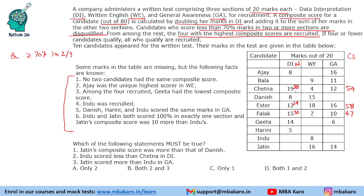For the remaining candidates, we use the given statements. First: no two candidates had the same composite score, so the composite score is unique for all. Second: Ajay was the unique highest scorer in WE. We know someone scored 18, so Ajay must score greater than 18 — either 19 or 20 — and no other person can have that score.